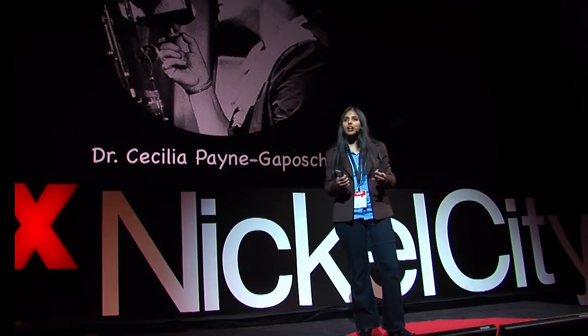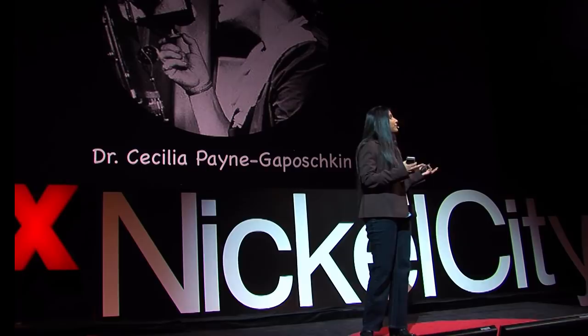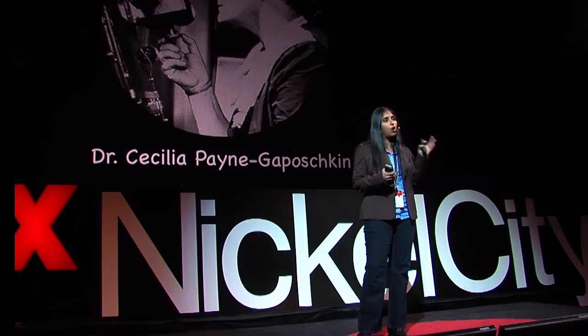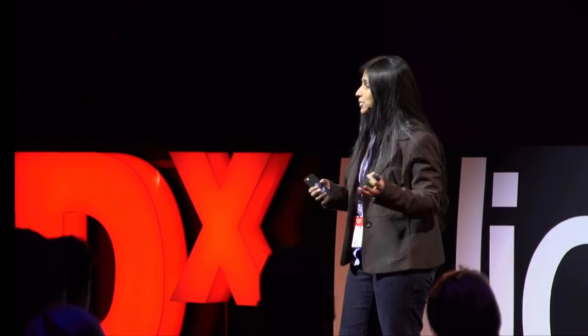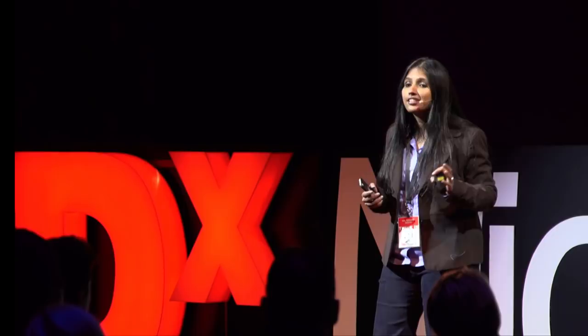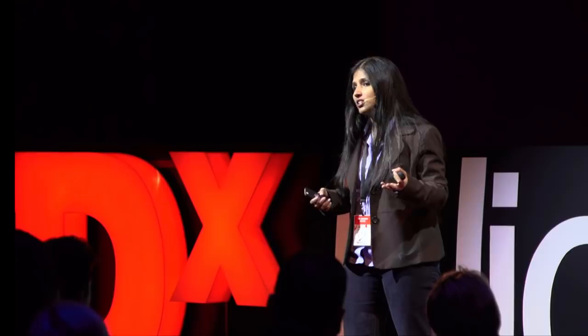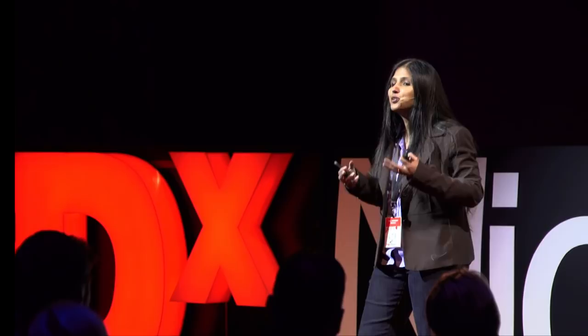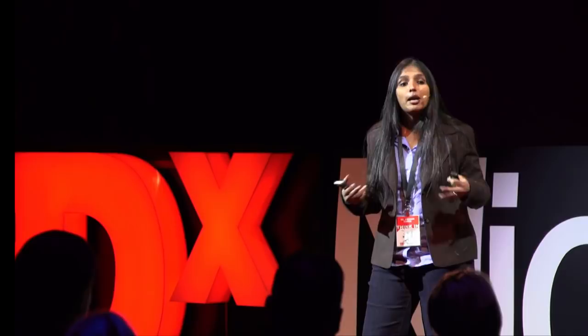And she figured out something amazing. All those differences in the barcode were because all these different stars had different temperatures. But by far the most common element in all those stars was hydrogen and helium. There are 100 billion stars in our galaxy alone, and there are 100 billion galaxies out there. And using these equations from quantum theory, this young woman was able to figure out a universal property of all these stars — the chemical composition of the universe.